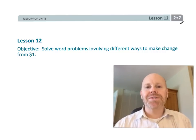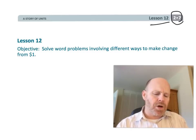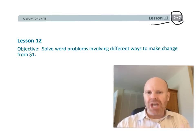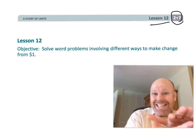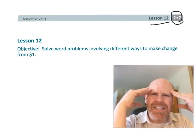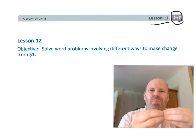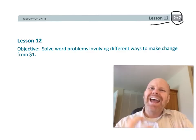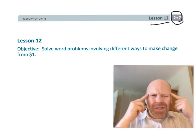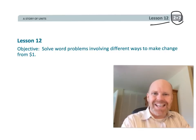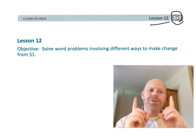This is second grade, Module 7, Lesson 12. In this lesson, students are going to solve word problems involving making change and subtraction, although sometimes it's going to be an addition problem with a missing addend. We want students to be able to think about these problems, represent them with a tape diagram, and then decide on a proper strategy — subtract, or think about it as an addition problem with a missing addend. So let's get started.